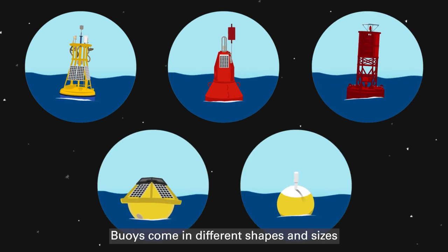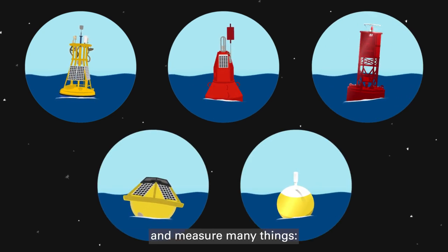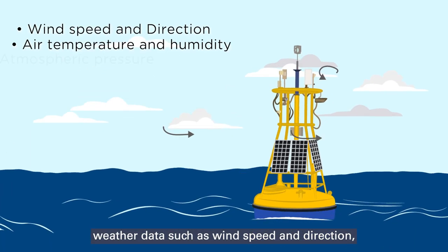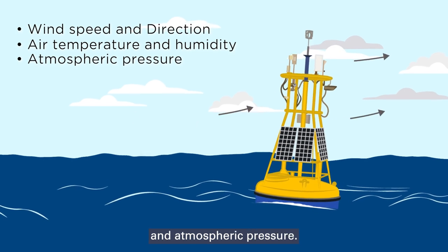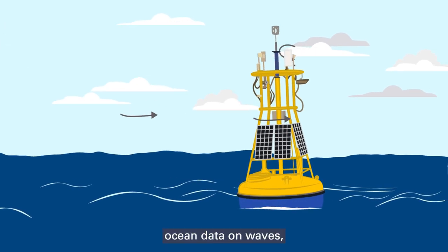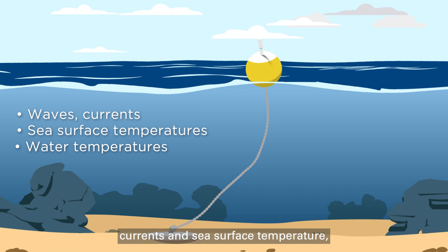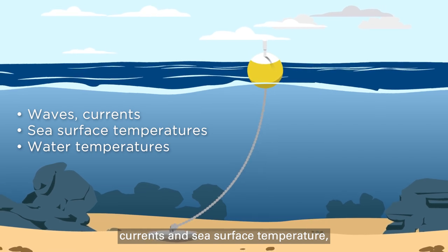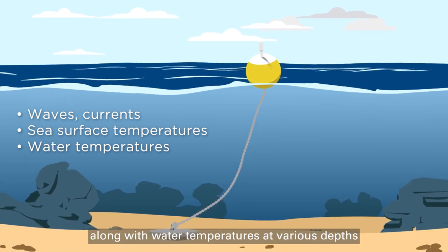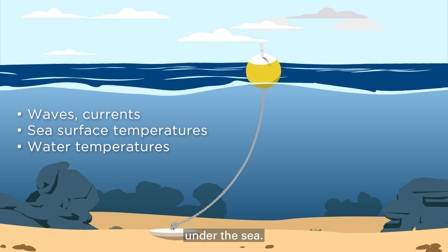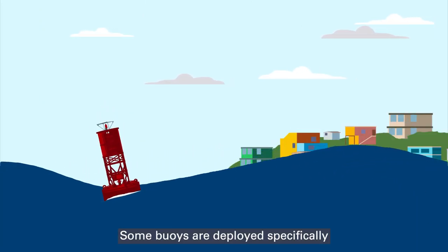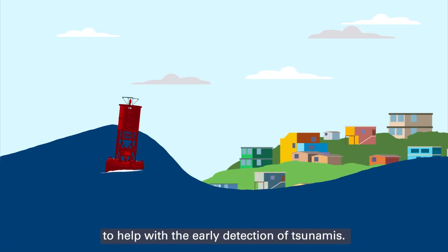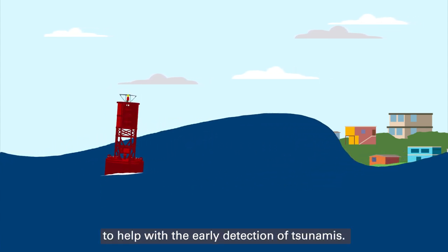Buoys come in different shapes and sizes and measure many things. Weather data such as wind speed and direction, air temperature and humidity, and atmospheric pressure. Ocean data on waves, currents and sea surface temperature, along with water temperatures at various depths under the sea. Some buoys are deployed specifically to measure water level to help with the early detection of tsunamis.